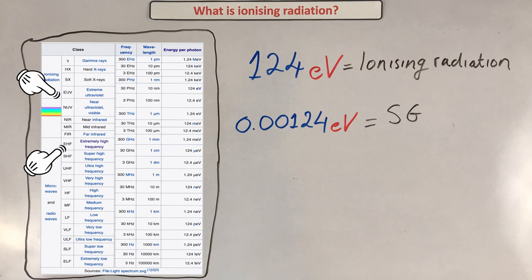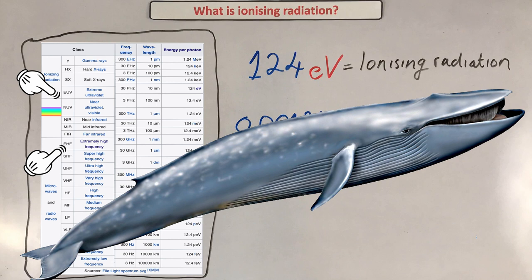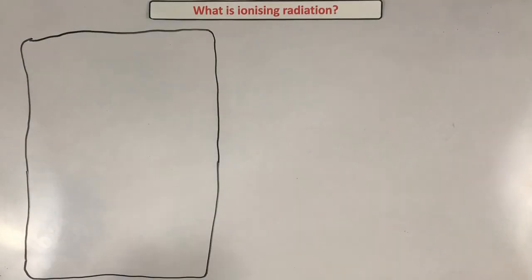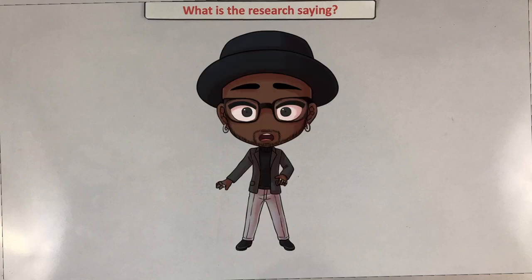A hundred thousand is a lot — let me help you visualize the magnitude. One liter of water is exactly one kilogram. A hundred thousand kilograms is roughly the mass of a blue whale — the largest animal that's ever existed on this planet. So a hundred thousand times more of something is a lot.